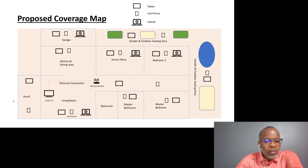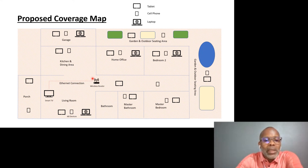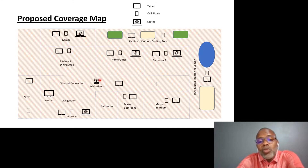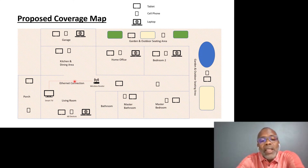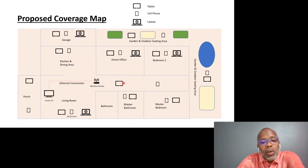Now let's look at the coverage map. In this option, we connected the smart TV — which was one of the user's devices — directly to the wireless router via cable, so the smart TV no longer uses Wi-Fi, eliminating contention for airspace. We've also moved the access point closer down the corridor, because there were issues to the back, the side, and parts of the house. Moving that access point in this direction increases coverage in those areas. This access point has been brought down the corridor and mounted on the ceiling.